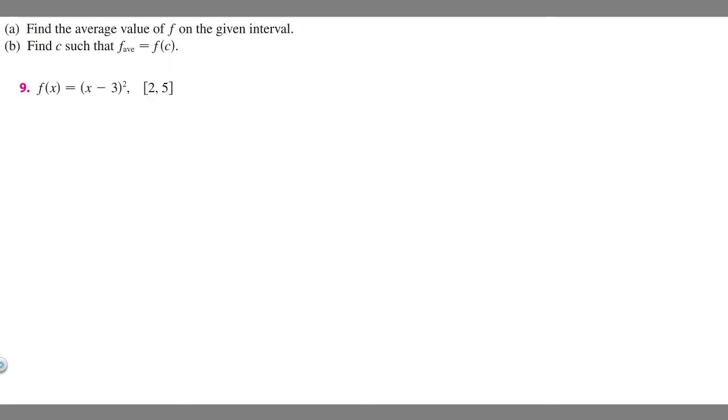So let's go ahead and start with a. We need to find the average value of f on this interval. In order to do this, there's a formula that you want to use. So f average is going to be equal to 1 over b minus a times the integral from a to b of f of x dx. So this is the formula we use.